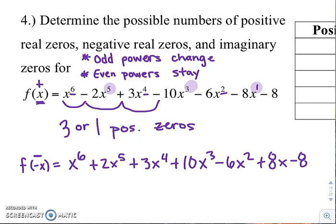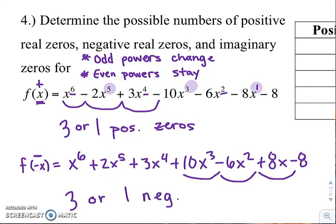It starts out positive and doesn't actually change until you get to the 10 and the negative 6. So right there it changes, and then changes again from negative to positive, then positive to negative. So this would also be 3 or 1 negative zeros. If you only had one sign change, it is possible for that to be the case — then you would just have one negative zero.